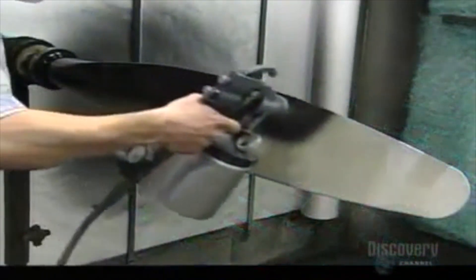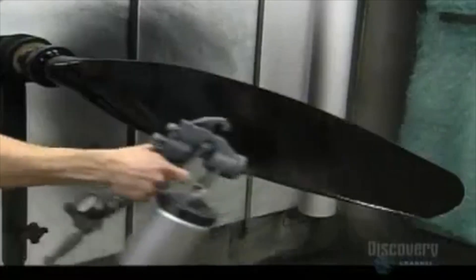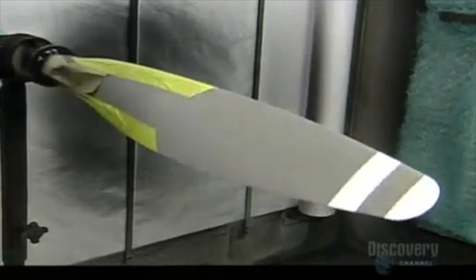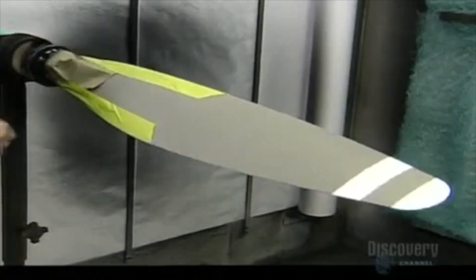Blades that get the blue light move on to the paint shop. A coat of black on the backside to prevent sun reflection into the pilot's eyes, and stripes for safety to make the spinning blades visible.